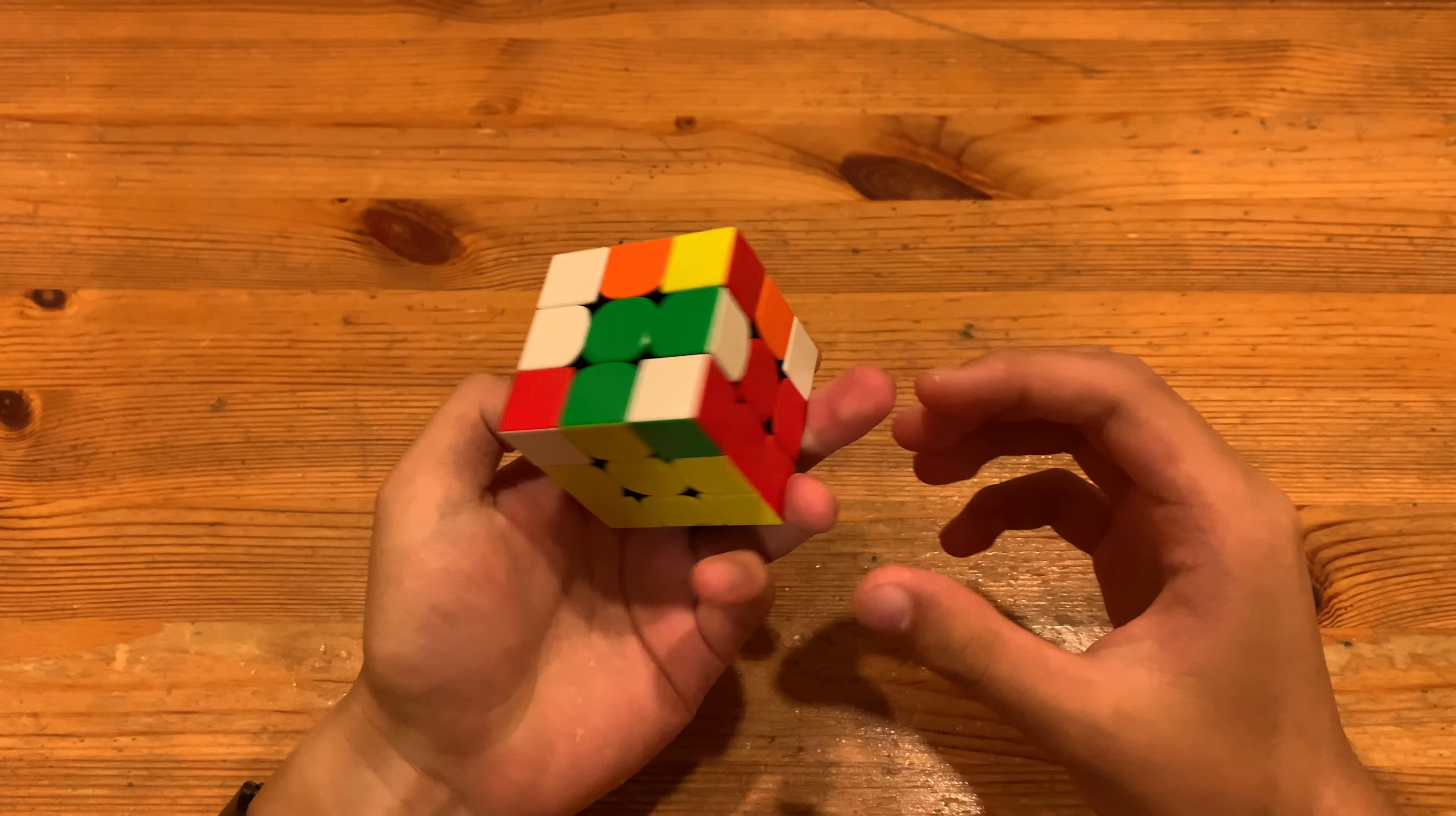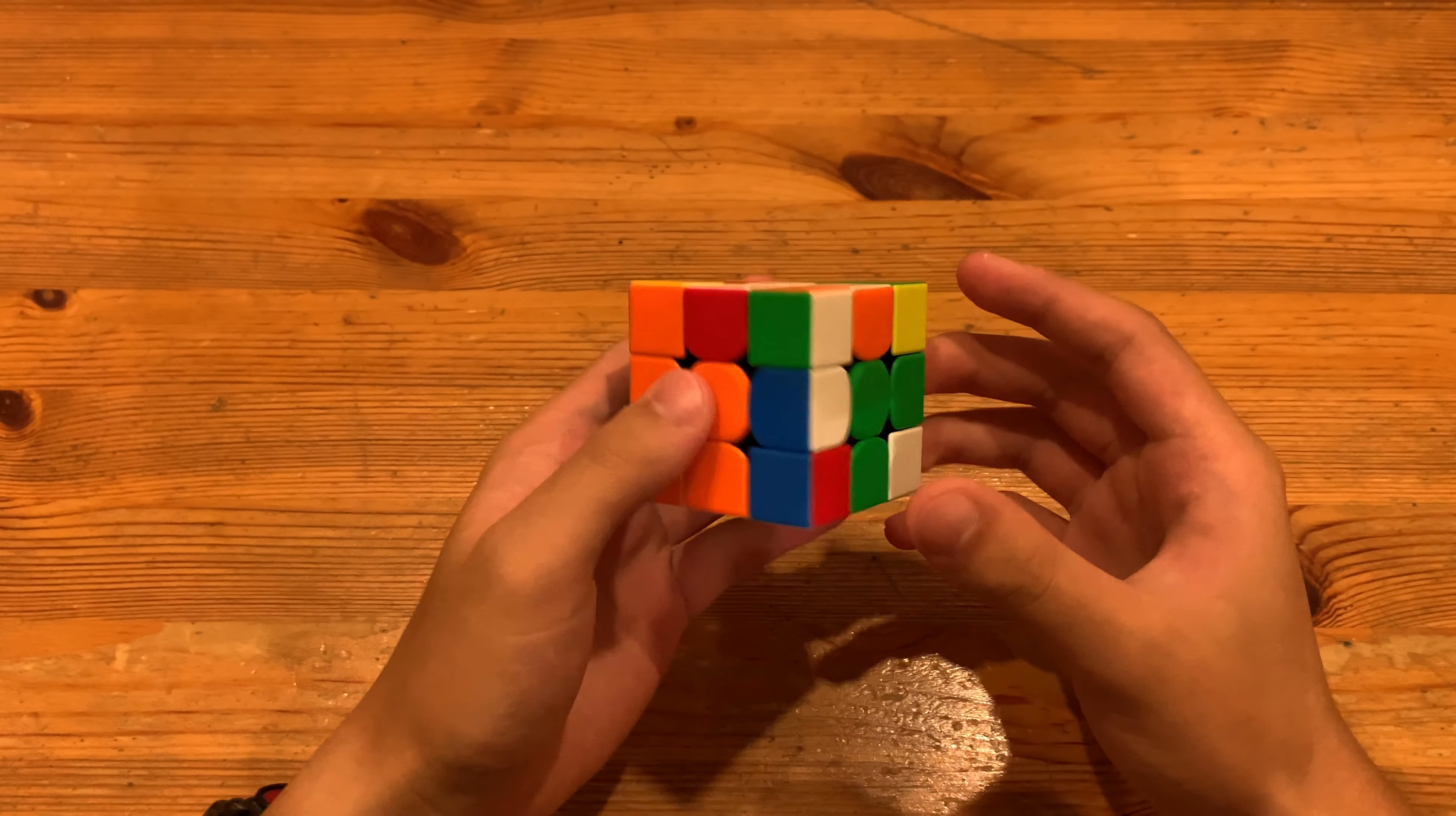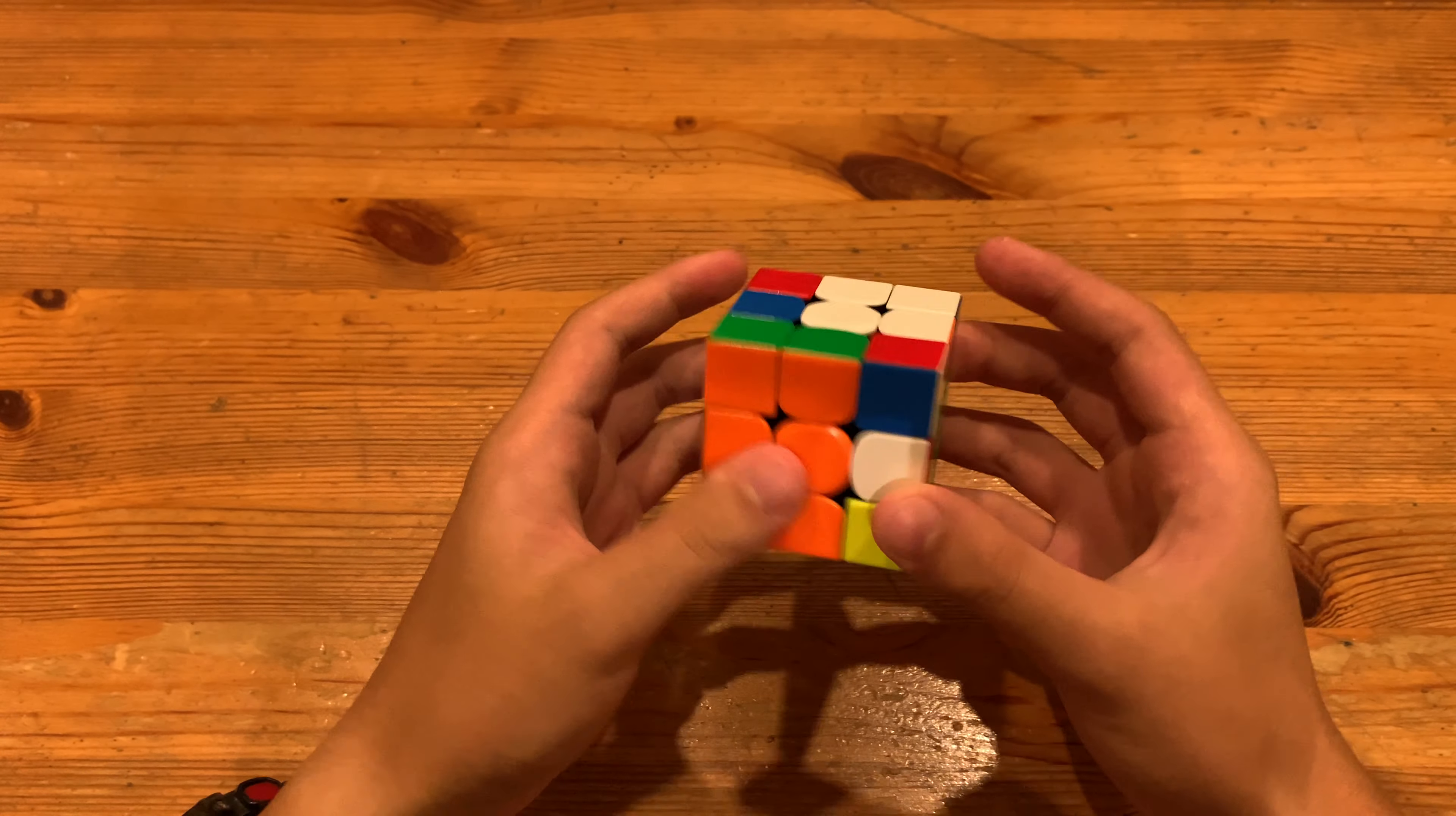Next, this F2L pair over here, what he did was R, U', R' to pair it up and then cancel into inserting. However, he did have a slight lockup, so R, U', R2', R, R', slight lockup but I can't really see it.